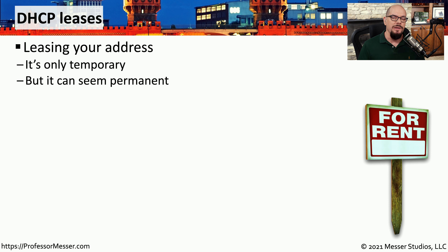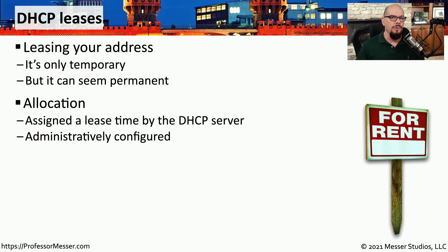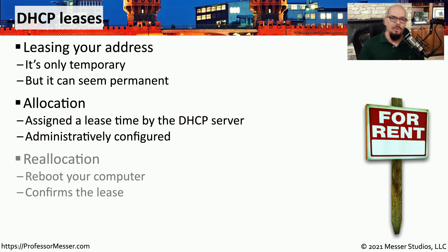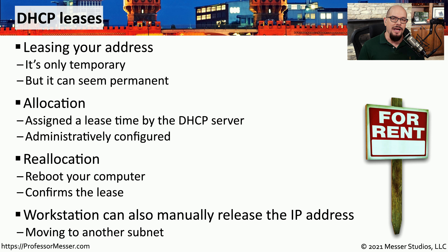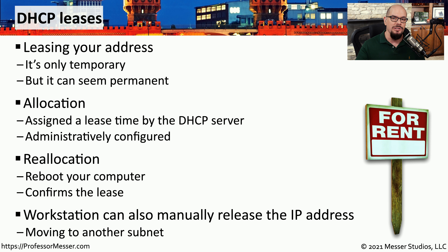The lease for the IP address you receive on your workstation is only available for a certain amount of time, and unless you renew the lease, you have to give up that IP address at the end of the leasing process. The IP configuration, all IP settings, and the lease time are configured by the DHCP server administrator. That lease time could be very short, or the administrator can set it to be days or even weeks. If a device is rebooted, it checks back in with the DHCP server and the lease may be reconfirmed. You can also manually release the IP address back to the DHCP server and request a new one — especially useful if you move a laptop to a new subnet and need the DHCP process to occur again.